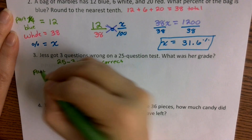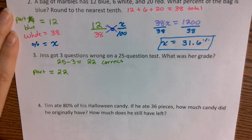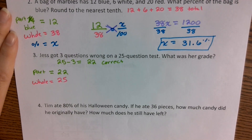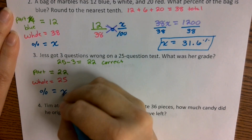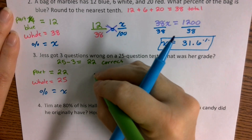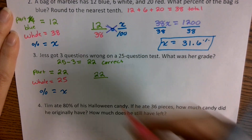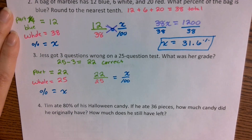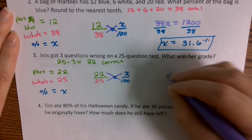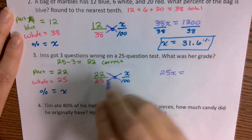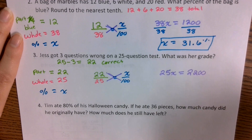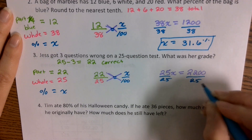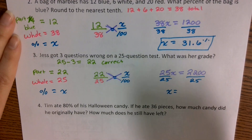So our part represents 22. Our whole represents the 25 questions. We want to know what her percent is — what's her grade. We're going to set the proportion up as 22 over 25 equals X over 100. We can do our cross product: 25 times X gives 25X, and 22 times 100 gives 2,200. Then we divide 2,200 by 25 and we get a grade of 88%.